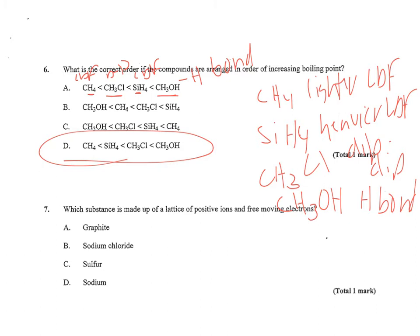Number seven wants to know which substance is made up of a lattice of positive ions and free-moving electrons. This is describing a metallic bond. Graphite is carbon, sodium chloride is a metal and a non-metal, sulfur is a non-metal. Only D should have a metallic bond in it.